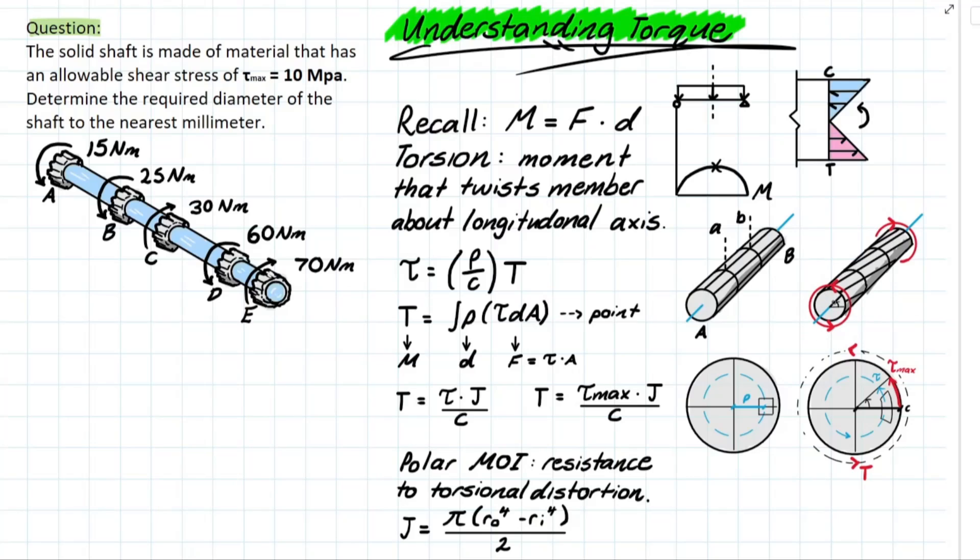If we look at the ends of our members, if we imagine that our member was free, we're going to have an equal and opposite angle that's created based on that twist at both ends of the member.